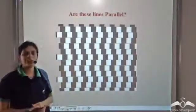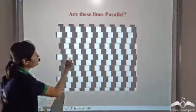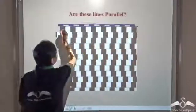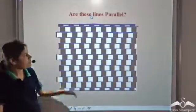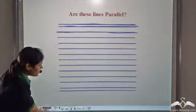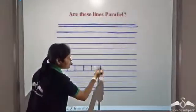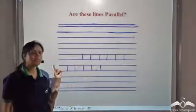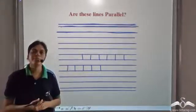So can you tell me are these lines parallel or not? They do not appear to be parallel. Let us draw lines here — we draw lines all over. Now let us concentrate on the lines and take any two of them. We see that this distance is constant — this distance is the same. Which means that these lines are actually parallel, although they did not appear to be parallel. But these lines are actually parallel lines.